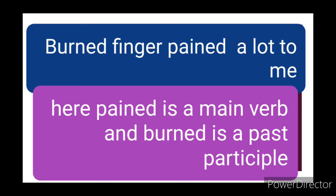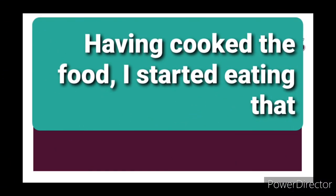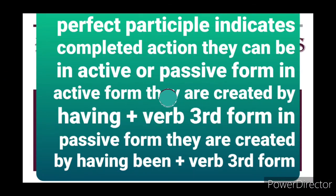Last is perfect participle. First, as an active form: 'Having cooked the food, I started eating that.' Here 'having cooked the food' is the perfect participle and 'started eating' is the main verb. Second example: 'Having finished my apple, I started to eat cake.' Here 'having finished' is the perfect participle and the second action started after completing the first. Both 'having cooked the food' and 'having finished my apple' are active forms of the perfect participle, where the subject is actively doing the action.